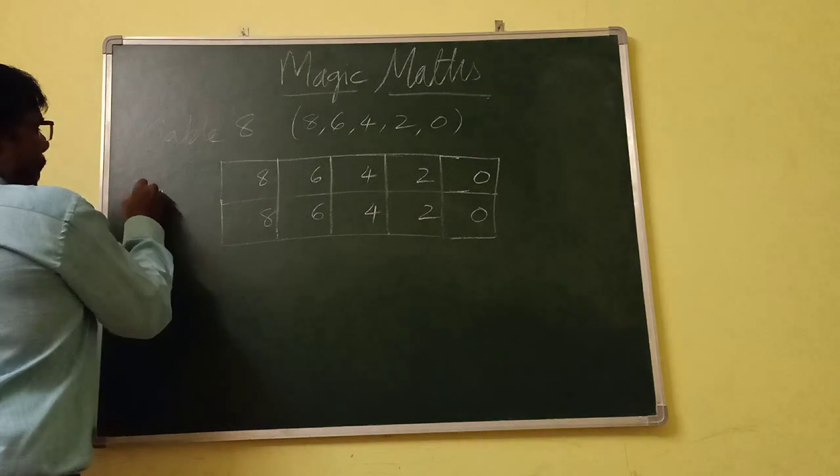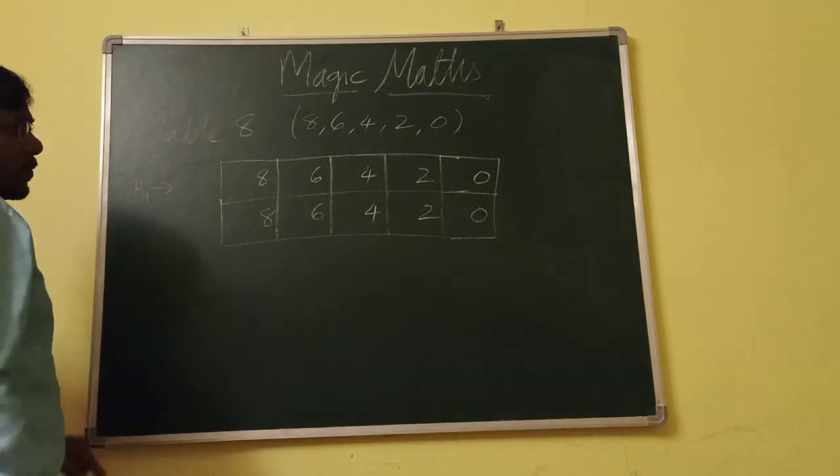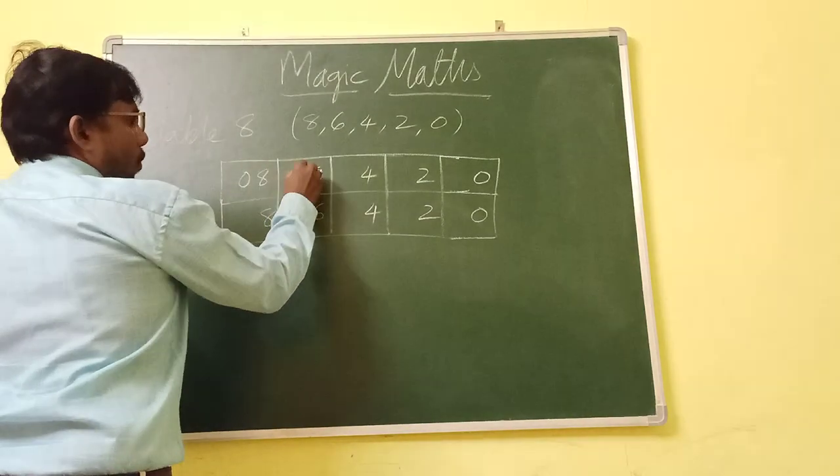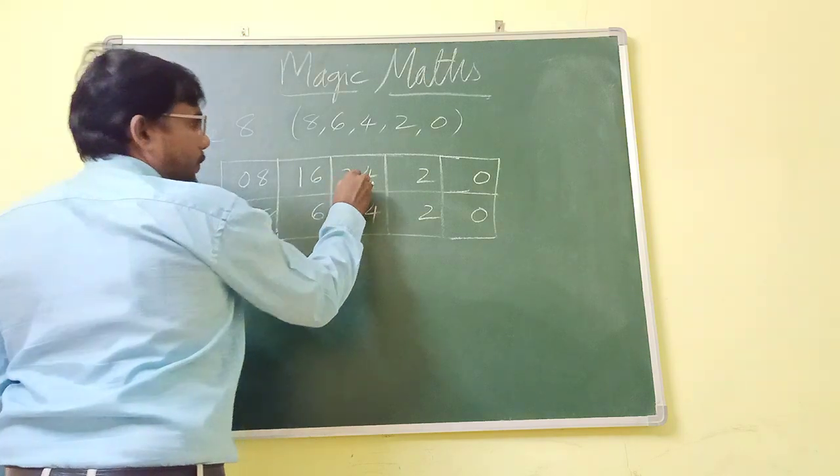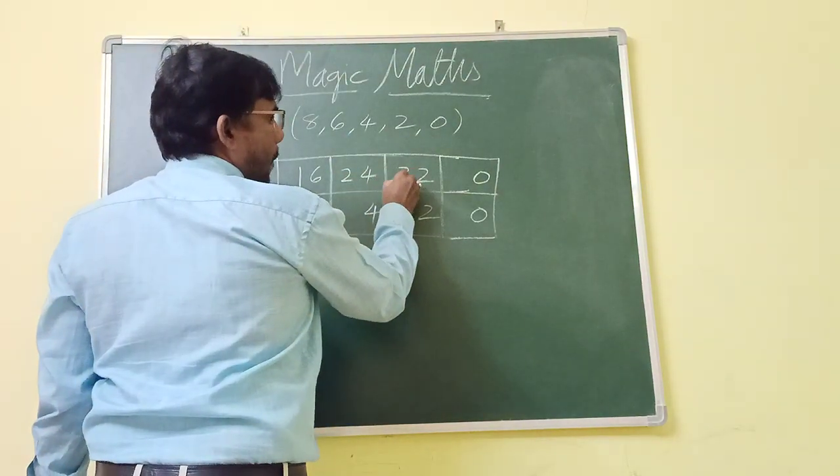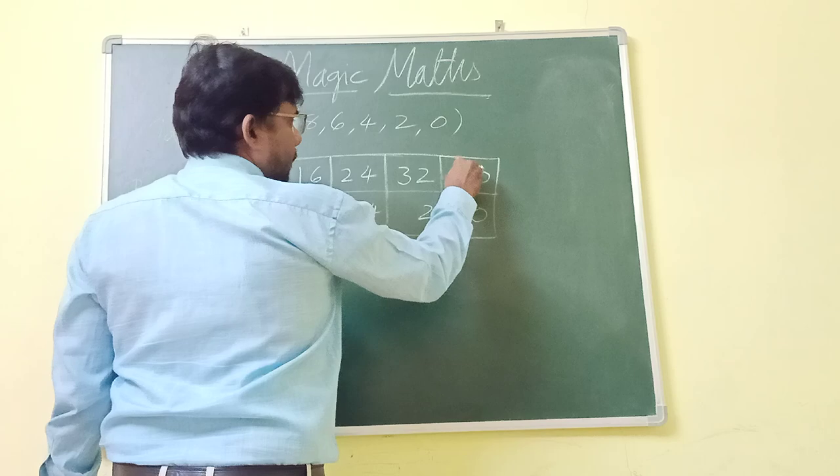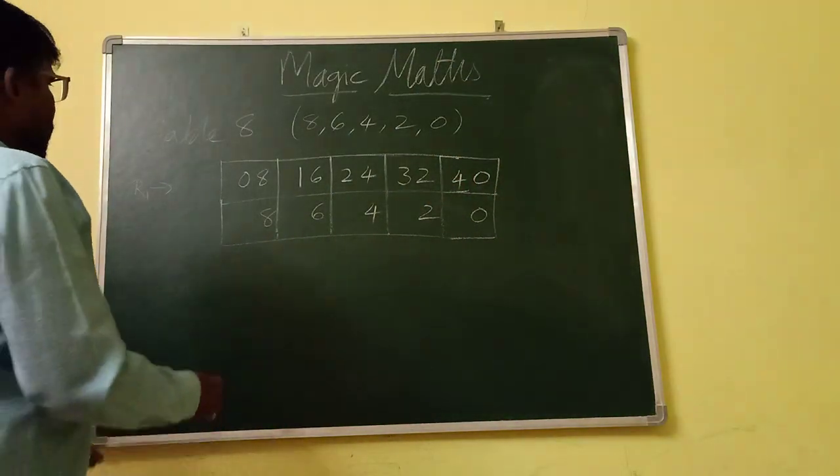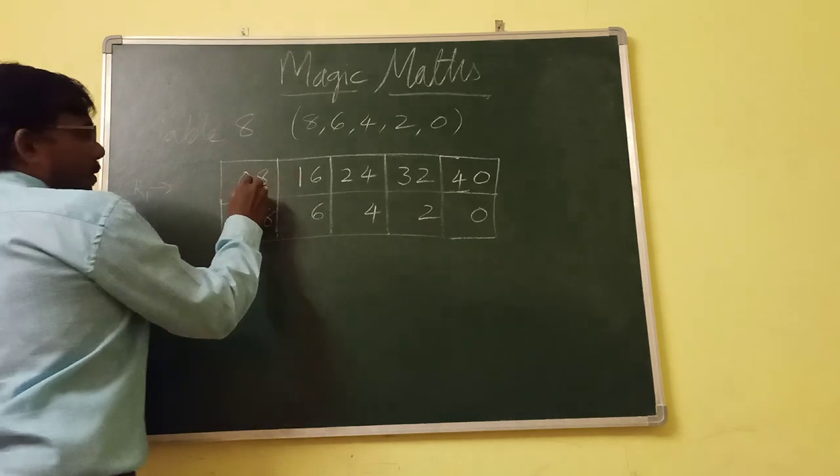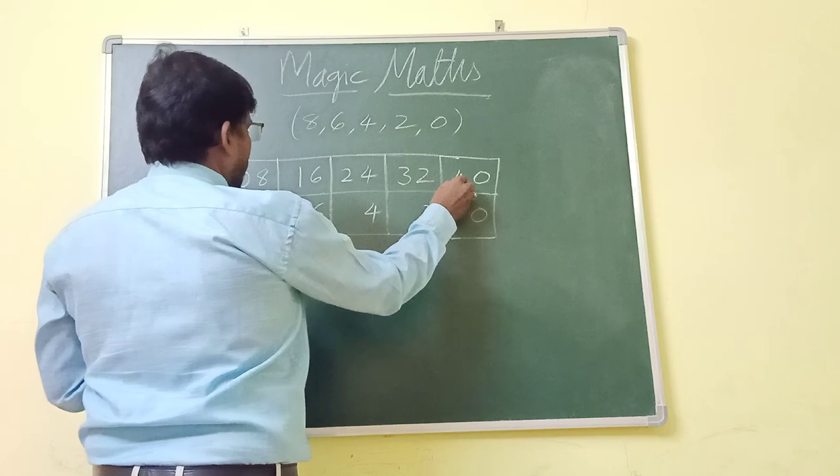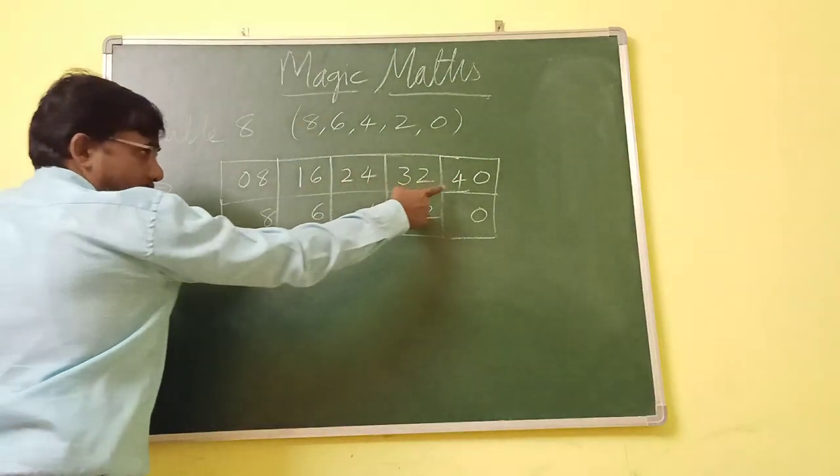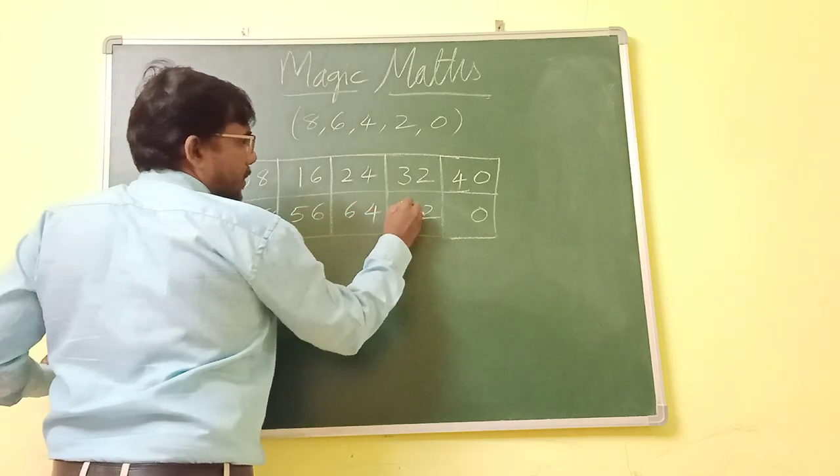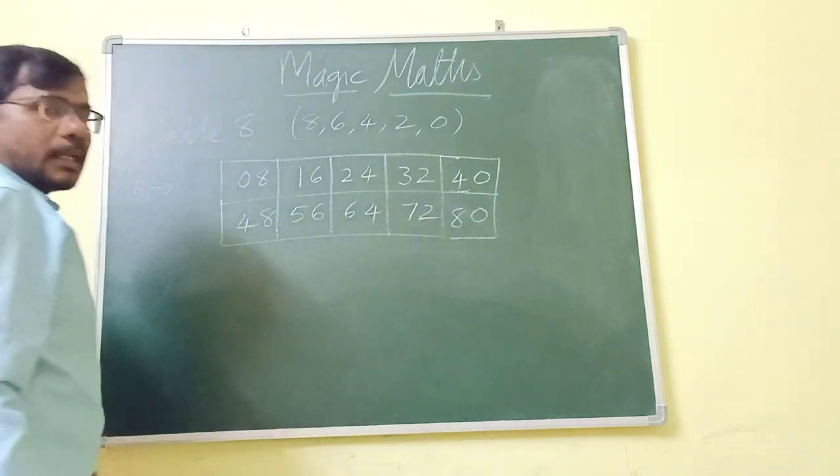Now in this first row, what are the matching numbers we need to use? First is 0, 1, 2, 3, 4. You should take the digits from 0 to 9. Now 0, 1, 2, 3, 4. Again, what is the last number? 4. So again, repeated 4, 5, 6, 7, and 8.